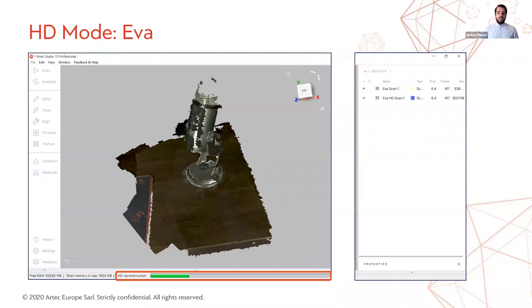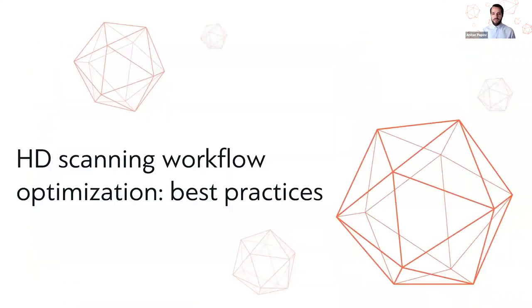As you can see, there aren't that many things to keep in mind when using HD mode. It pretty much boils down to turning it on and adjusting HD data resolution when needed — for most projects you won't need to readjust it. The processing workflow is identical to normal Artic Studio projects, apart from a few nuances we'll discuss. Now let's address the hardware and what you need all that computational power for.